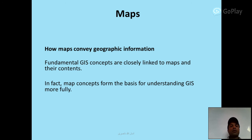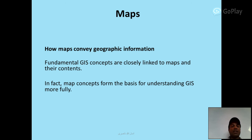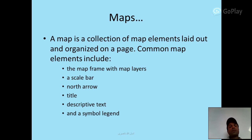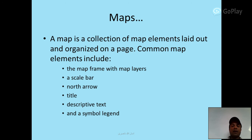Maps — How maps convey geographic information: fundamental GIS concepts are closely linked to maps and their contents. Map concepts form the basis for understanding GIS more fully. A map is a collection of map elements laid out and organized on a page. Common map elements include the map frame with map layers, a scale bar, north arrow, title, descriptive text, and a symbol legend.